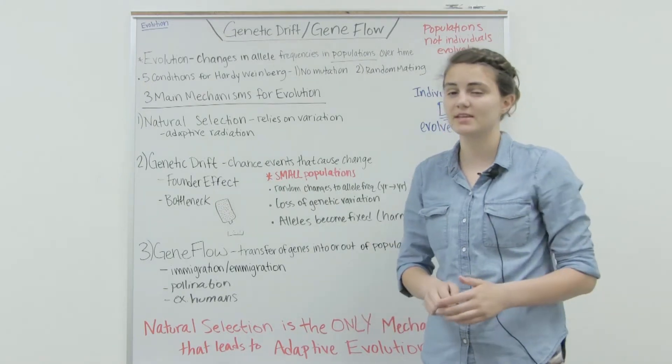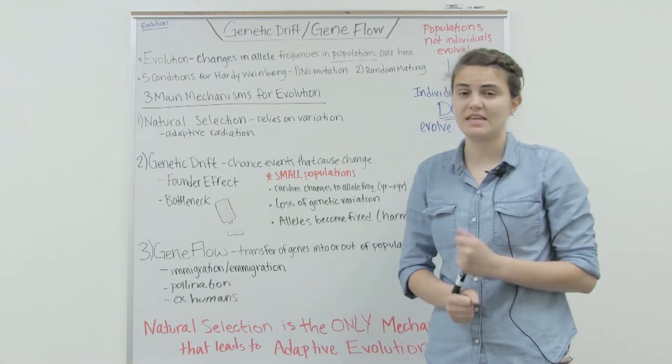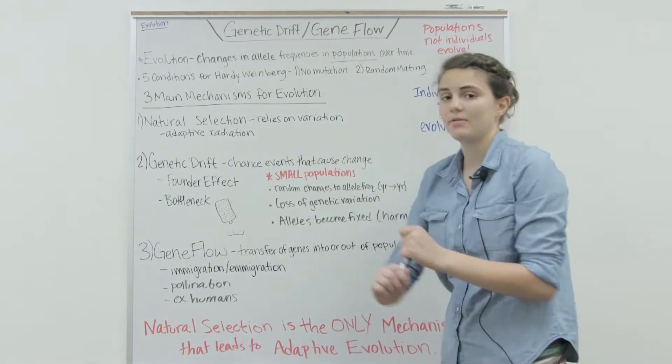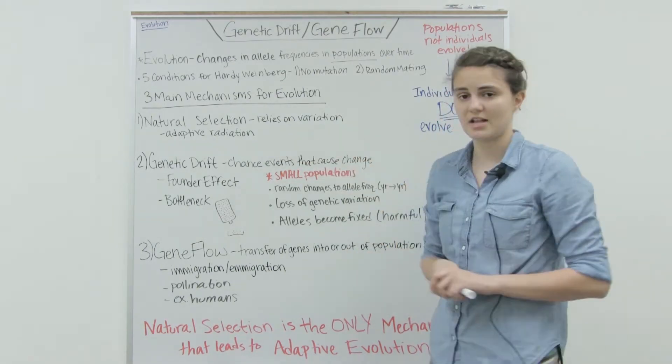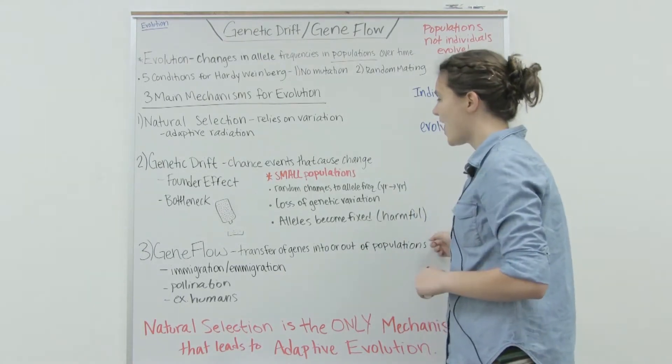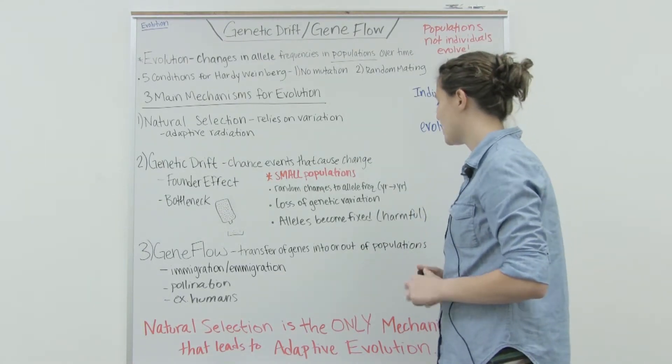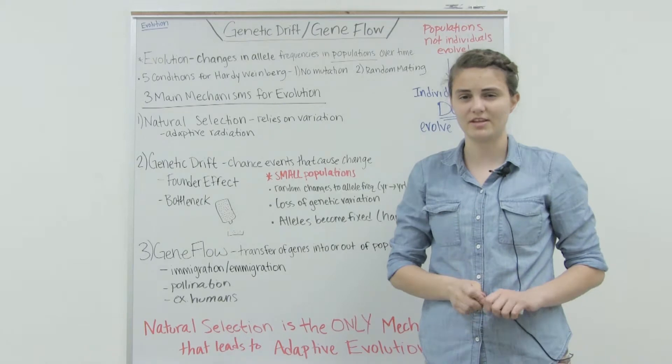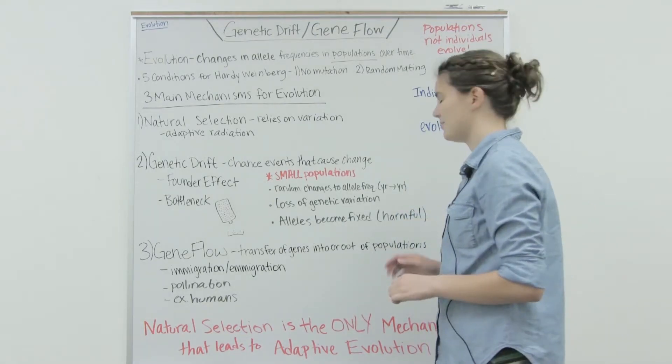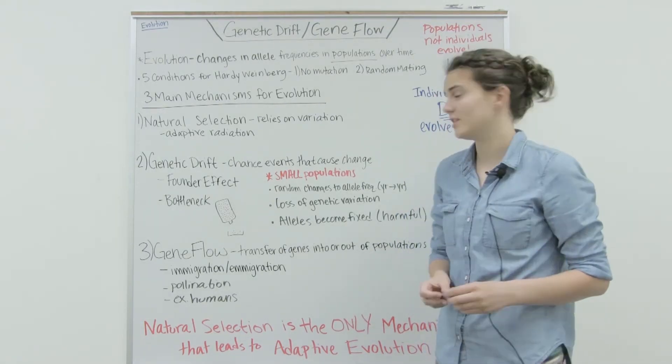This can become a problem because some of those traits may have been needed to keep the population alive, because natural selection relies on variation. Genetic drift may cause alleles to become fixed, certain alleles.